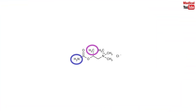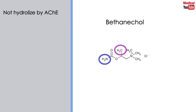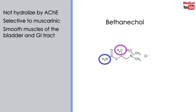So, why don't we develop a product with both additions — the carbamate ester and beta-methylation? This product is called bethanechol. It is not hydrolyzed by acetylcholinesterase, although it is inactivated through hydrolysis by other esterases. It is selective to muscarinic receptors, and its major actions are on the smooth muscles of the bladder and GI tract. It has about a one-hour duration of action.